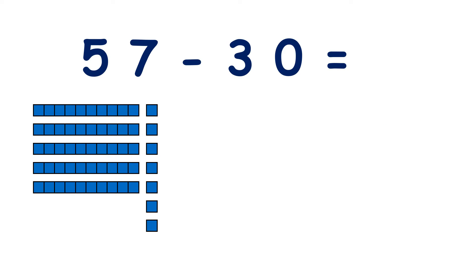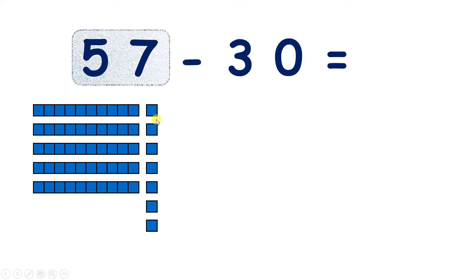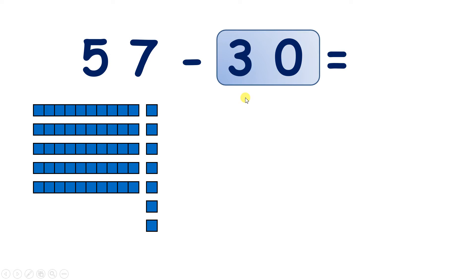Now 57 take away 30. So we start with 5 tens and 7 units, and we're subtracting 30. So how many tens are we subtracting? Well, 30 is 3 tens, so we need to take away 3 of these tens. So we write 57 at the end of our number line.